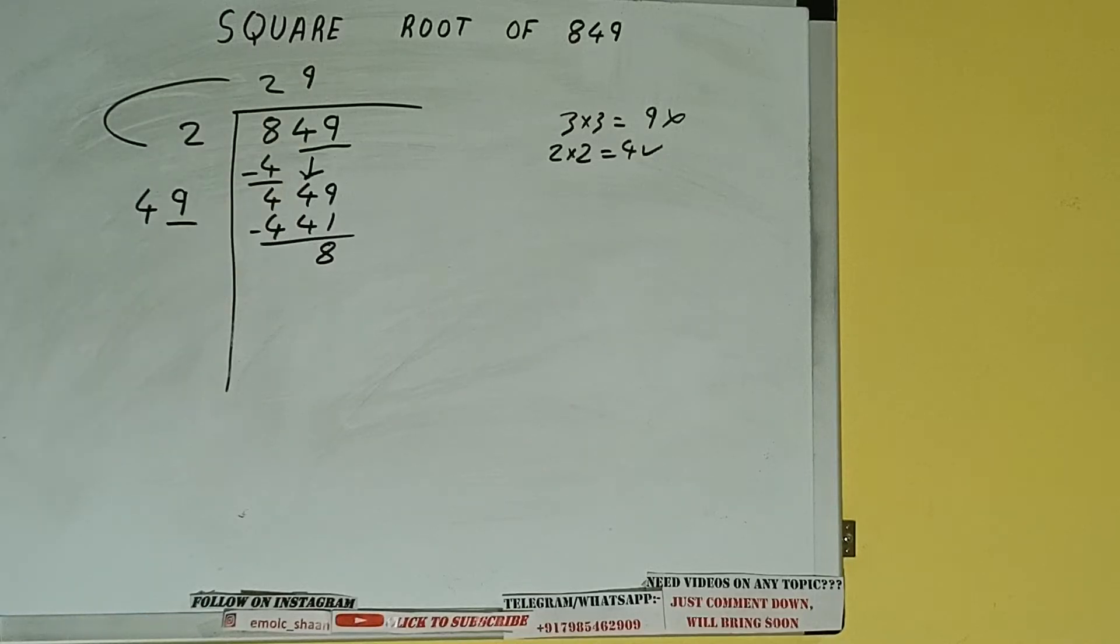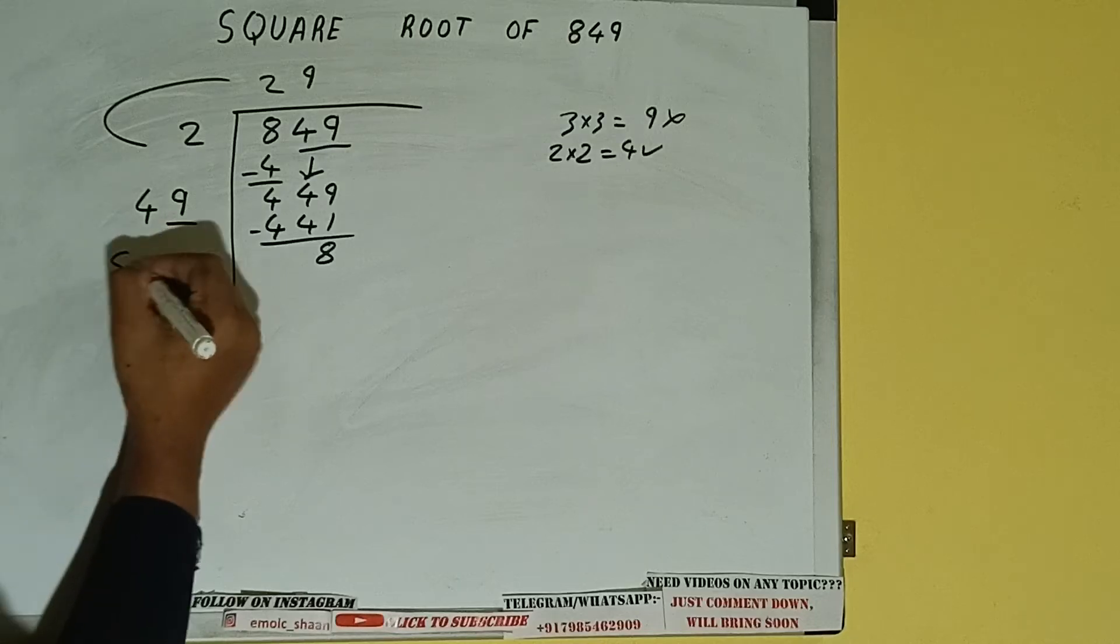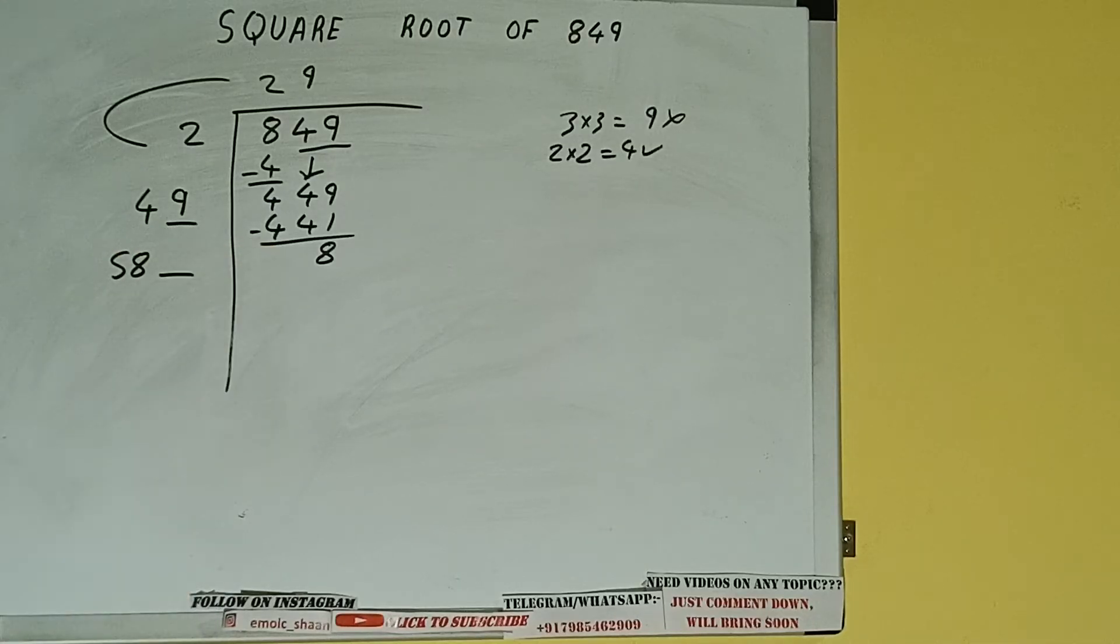Now 49 into 9. Add both, so 49 plus 9 will be 58 and keep a digit extra. And this number we need to make it big.